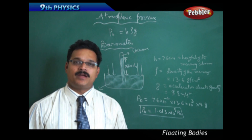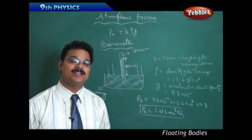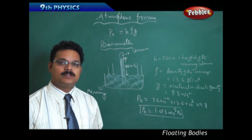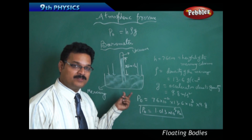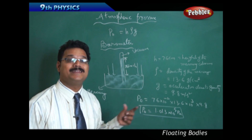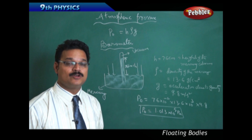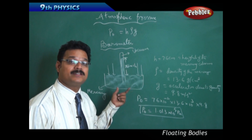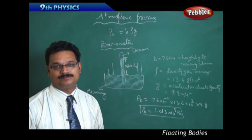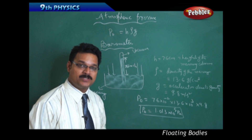A question may come to mind: why do we use only mercury in a barometer to find atmospheric pressure? Why can't we use other liquids? Because mercury has specific properties — first, it is a metal in liquid state; second, it has a very high melting point and won't melt at normal temperatures. Because its melting point is very high, it is preferable for finding atmospheric pressure.